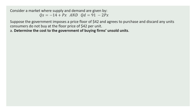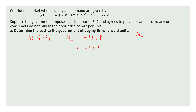Here in the market, demand and supply are given, and the government has set a price floor at $42. Now we need to know: at $42, how much is the supply in the market and how much is the demand? Only then can we say whether there are goods the government can buy. So first, let's see at $42 what quantity suppliers are supplying.